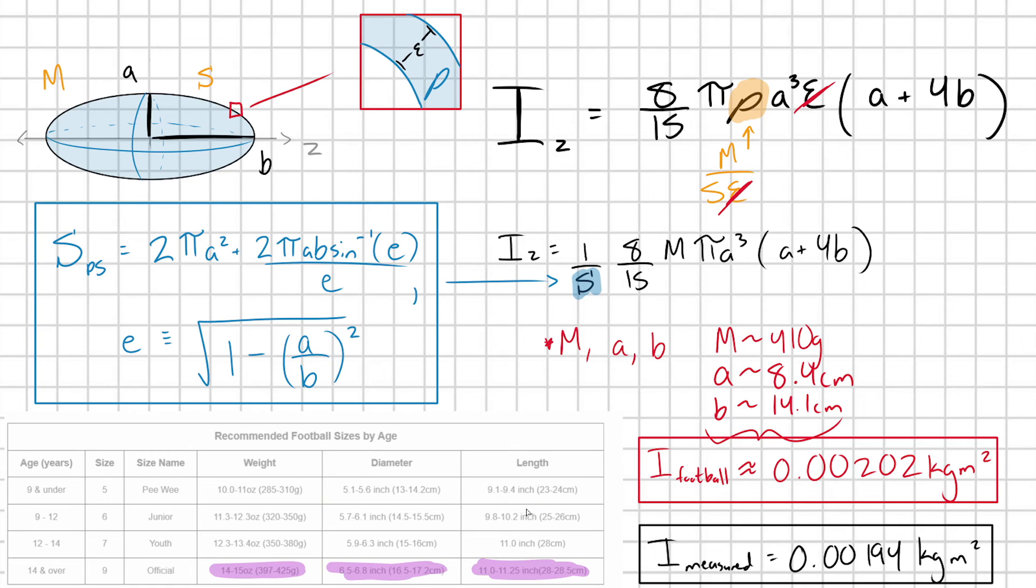The last take-home message I want to leave, because this is important when talking about experimental physics, is that in our case we're more limited by the resolution of our actual data and coming up with this moment of inertia for a football than we are by the actual quality of our model, aka how close is a prolate spheroid truly to a football.